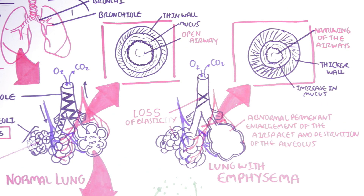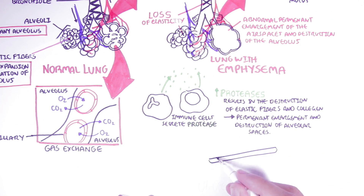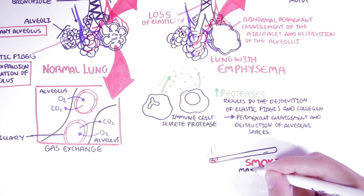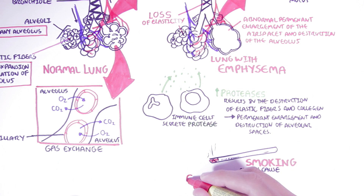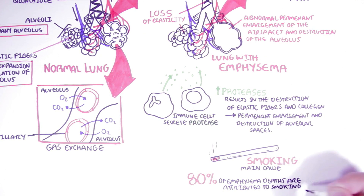Emphysema is mostly associated with heavy smoking — that is essentially the number one cause. About 80% of emphysema deaths are attributed to smoking, so it is no wonder that the number one preventative measure is to stop smoking. Emphysema is also associated with indoor or outdoor pollution.